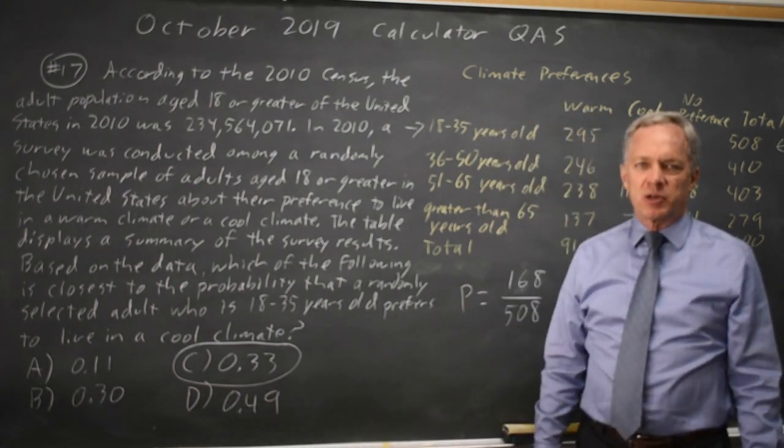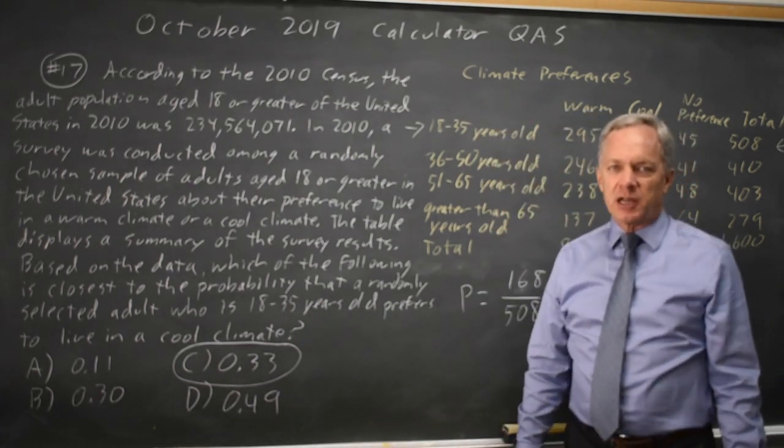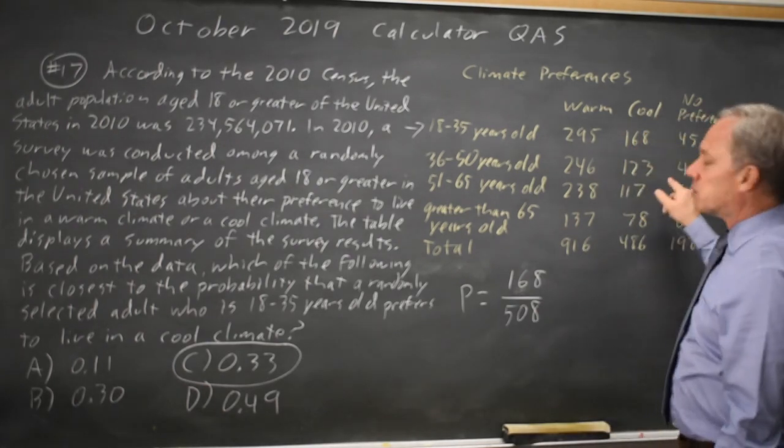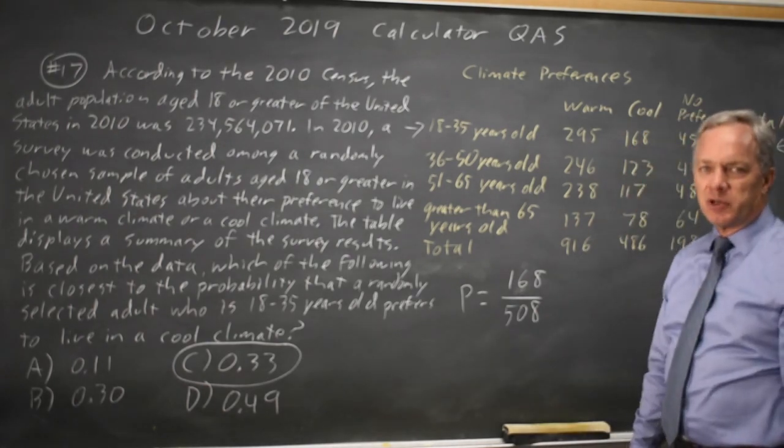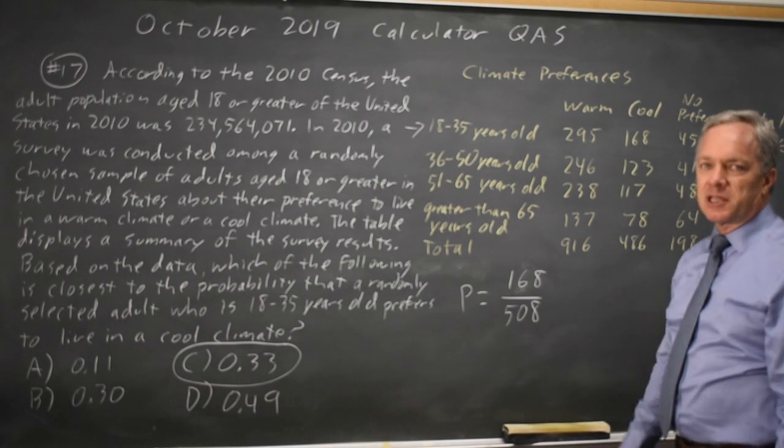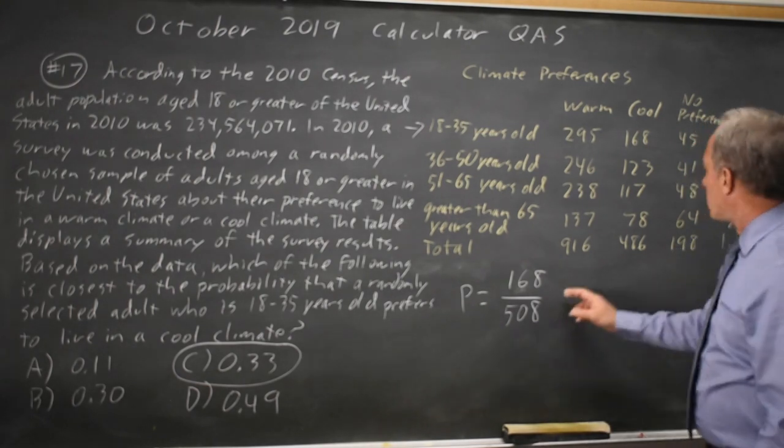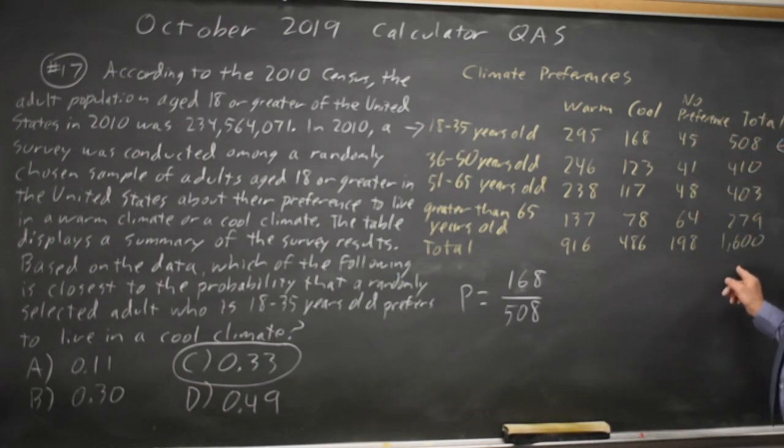When College Board asks for probability from a table, your denominator may be one or more rows. They have done it where it's more than one row, one or more columns, and again they've done it where it's more than one column. Or your denominator might be the entire table.